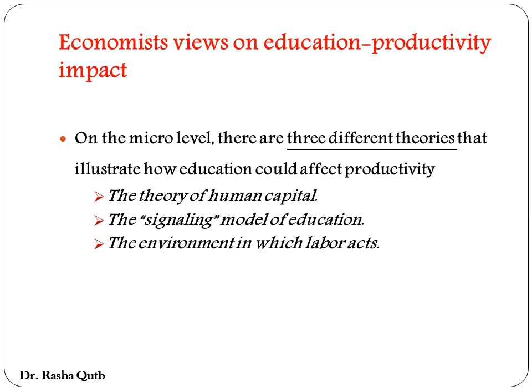Wages are a function of productivity. According to perfect competition, as we studied before, factors of production return according to their productivity. However, according to Spence's signaling theory, the level of education is merely a signal for productivity. So ultimately, the level of wages is determined by the education signal, regardless of whether the person is actually productive or not.